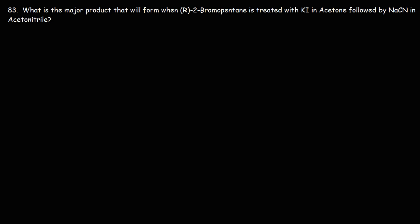Problem 83: What is the major product that will form when R-2-bromopentane is treated with potassium iodide in acetone followed by sodium cyanide in acetonitrile? First, let's draw R-2-bromopentane.